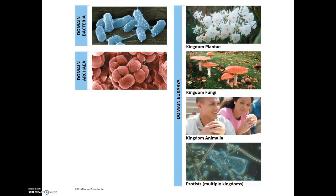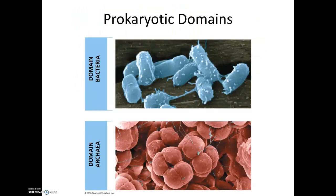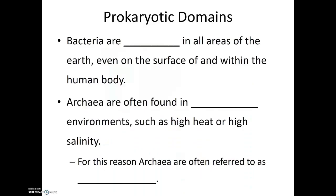So looking at these domains of life, again we have domain Bacteria and domain Archaea, and all the remainder of life is in domain Eukarya. Bacteria are abundant in all areas of the Earth, even on the surface of and within the human body. In fact, it's said that there are more non-human cells in and around your body than there are human cells. These non-human cells are much smaller and lighter than human cells, so by mass you're still mostly human, but if you just went by cell number, your body is actually more non-human than human.